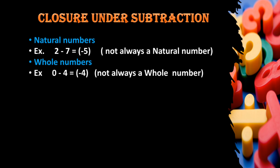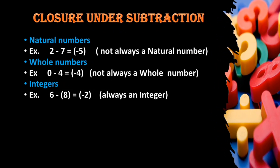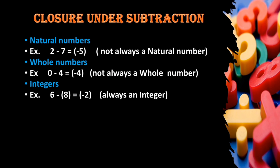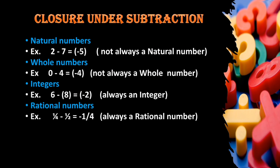For whole numbers, when a whole number is subtracted from another whole number, sometimes we get a whole number but sometimes we do not. For example, 0 minus 4 equals negative 4, and negative 4 is not a whole number. For integers, when an integer is subtracted from another integer, we always get an integer — for example, 6 minus 8 gives negative 2, which is also an integer. For rational numbers, when one rational number is subtracted from another, we always get a rational number.